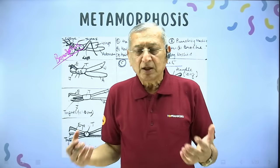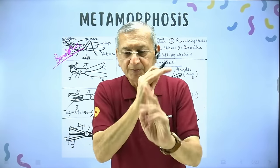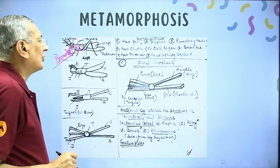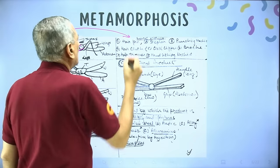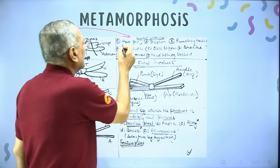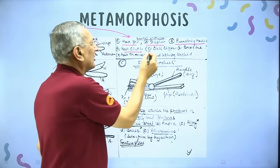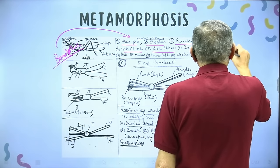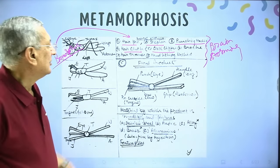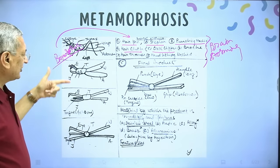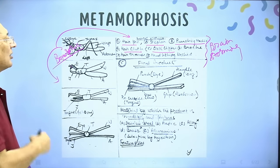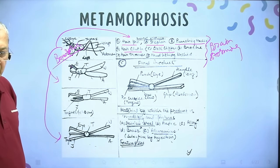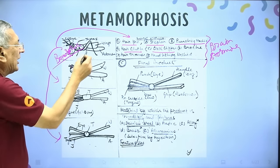Here the question is: from a grasshopper, what all can you draw? Examples include a hairpin, stapler, punching machine, or hair clutch. This shows your brainstorming ability. After brainstorming, you do stepwise sketches showing how the grasshopper is metamorphosed — for instance, into a punching machine.